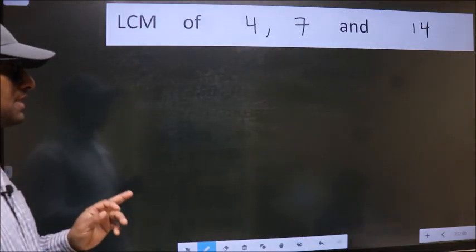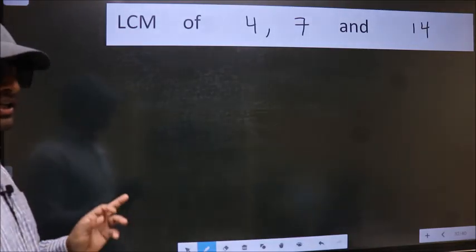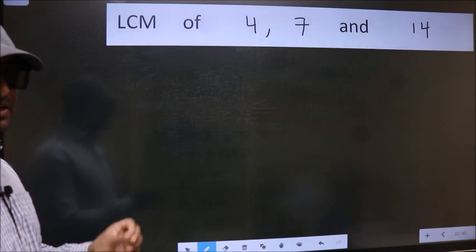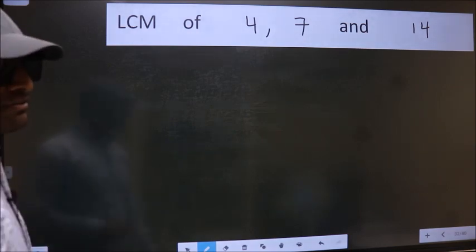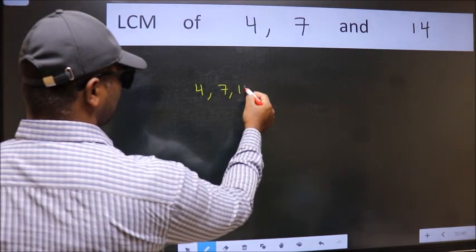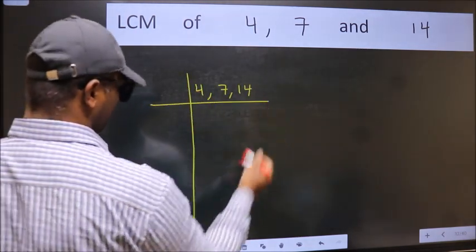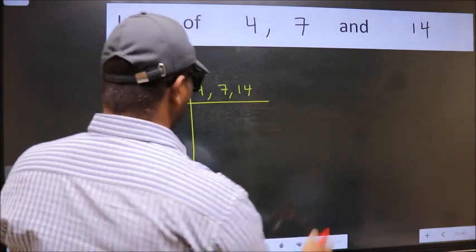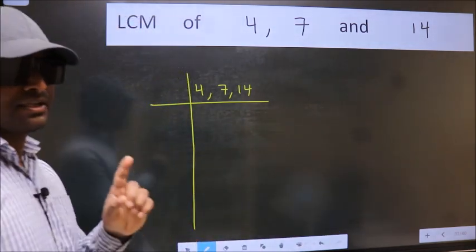LCM of 4, 7 and 14. To find this LCM, we should frame it in this way. 4, 7, 14. This is your step 1.